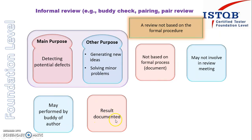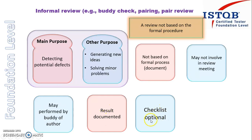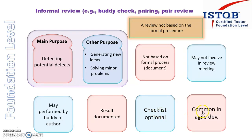Results are documented sometimes — whatever the buddy tells you about the problems, you document it and then fix it. A checklist is optional; most of the time there is no checklist, and whatever defects the buddy finds, they will report them. Informal review is also common in agile development, because agile is a very iterative model where things need to be done faster, making this type of review quite popular.